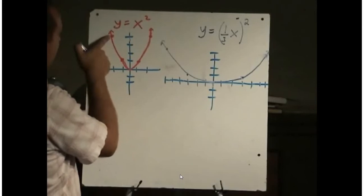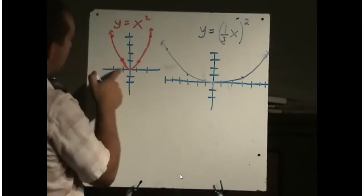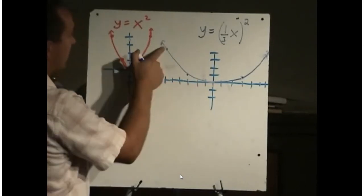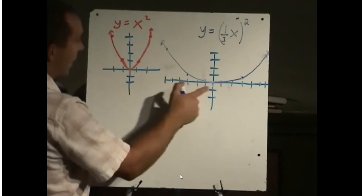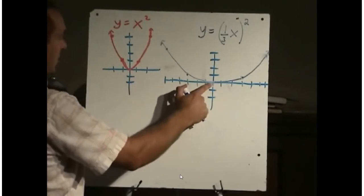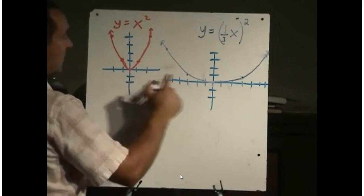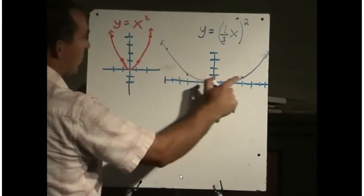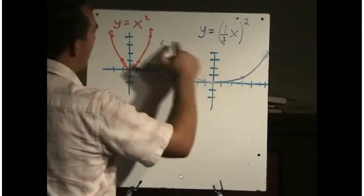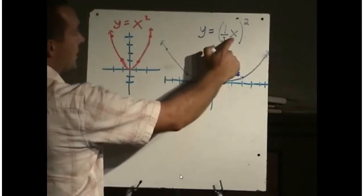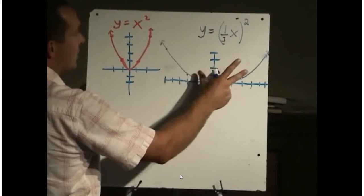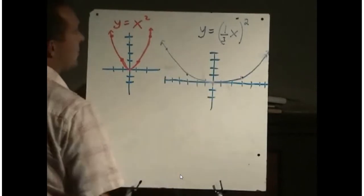This x value was at negative 2, giving the point (negative 2, 4). Now the x has been multiplied by 3, so we're at (negative 6, 4). Here we were at (negative 1, 1), now we're at (negative 3, 1). An x value of 0 multiplied by 3 is still 0. The x value of 1 is now at 3 with the same y value of 1. The x value of 2 has been multiplied by 3, so we go to 6 to get the y value of 4. Replacing x with one-third x horizontally expands the graph by a factor of 3.